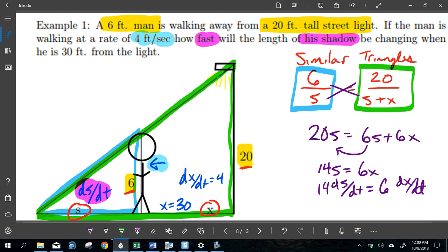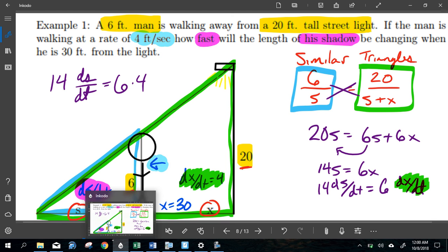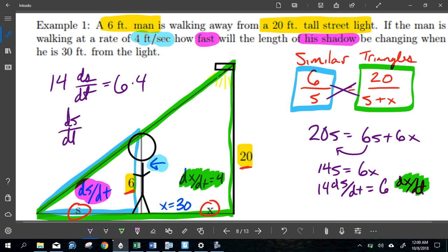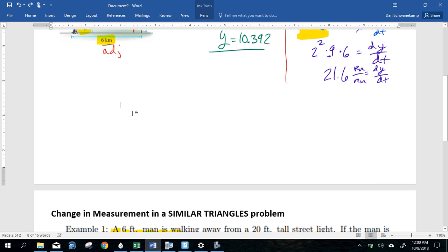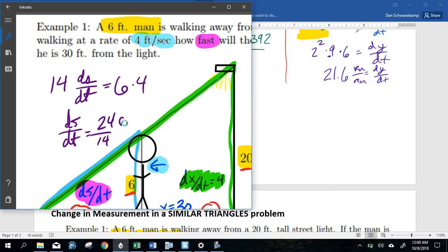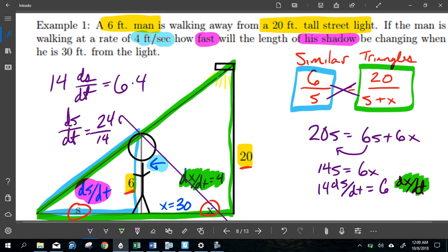Now I've got one thing I can plug in. I know what dx dt is. dx dt is 4. So right there, I'm going to plug in the number 4. So my problem becomes this: 14 dS over dt equals 6 times 4. 6 times 4 is 24. Divide that thing over. So I'm going to say dS dt equals 24 over 14. Change in S is feet per second. Feet per second. It quit working on me, but you get the idea.